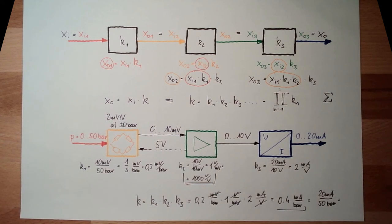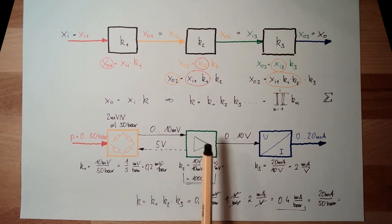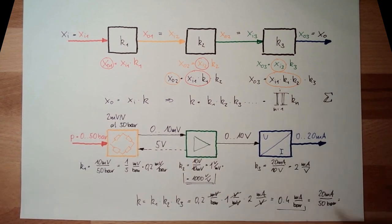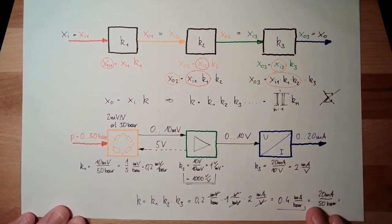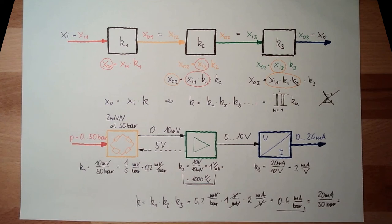So that's the chain structure — a very simple structure. It's simply a multiplication of all the factors. Next time we are talking about the parallel structure: what it is, what it's good for, what it's used for. Thank you very much for listening. Goodbye.